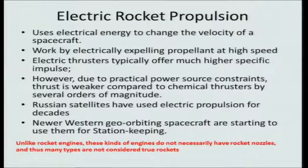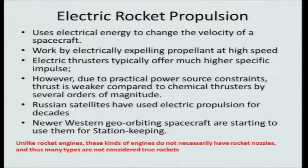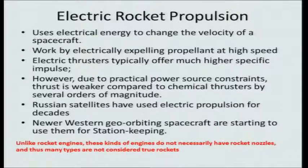What is electric rocket propulsion? Electric rocket propulsion uses electrical energy to change the velocity of a spacecraft. That is the basic premise of electric propulsion. The work is done in these systems by electrically expelling the propellant at very high speed. In the chemical rocket, it is essentially the conversion of chemical energy into kinetic energy, but here the conversion to kinetic energy is done electrically. Electric thrusters typically offer much higher specific impulse compared to chemical rockets because the velocity produced by these devices is much higher.